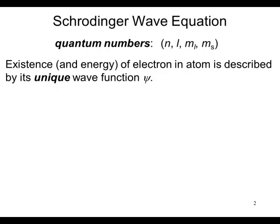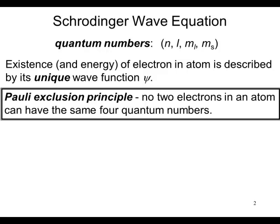We have learned from the Schrodinger wave equation that there are four quantum numbers: n, l, m sub l, and m sub s. We have described the existence and energy of the electron in an atom, described by its unique wave function, psi.